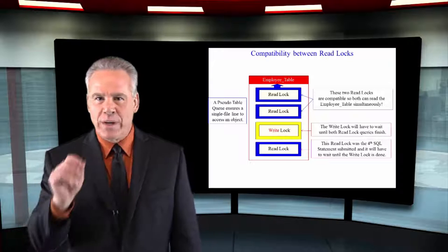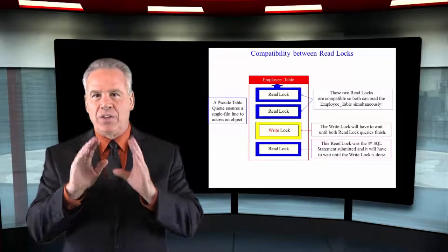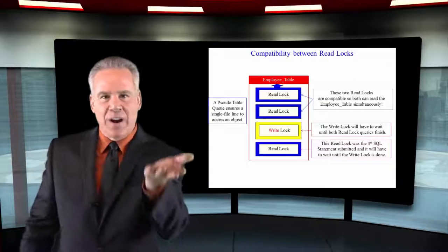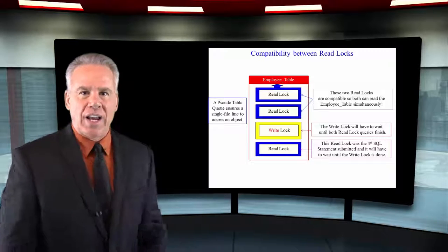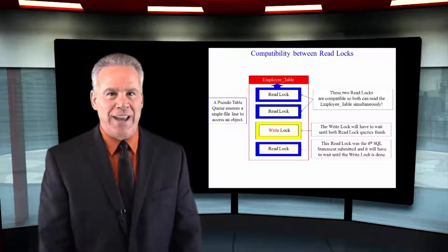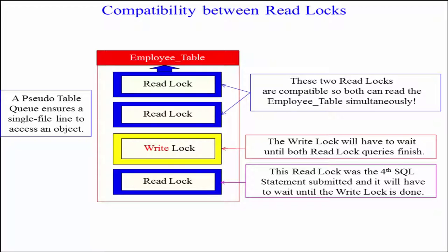Every time you want to read or insert, update, delete a table, it's going to put a read lock on it or a write lock on it. And it's first come first serve. There's only one single file line. I call it the queue. Teradata calls it a pseudo table. Now the brilliance behind this locking strategy is if you're compatible, you can move up.